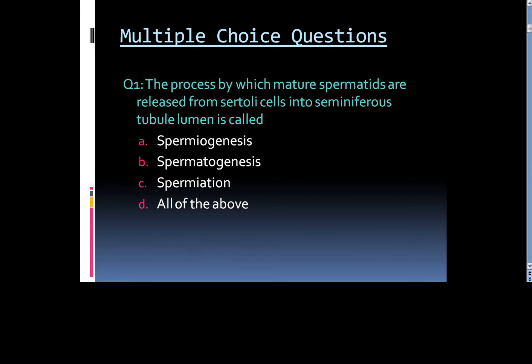First category is multiple choice questions. Question number 1: The process by which mature spermatids are released from Sertoli cells into seminiferous tubule lumen is called: A. Spermiogenesis, B. Spermatogenesis, C. Spermiation, or D. All of the above.